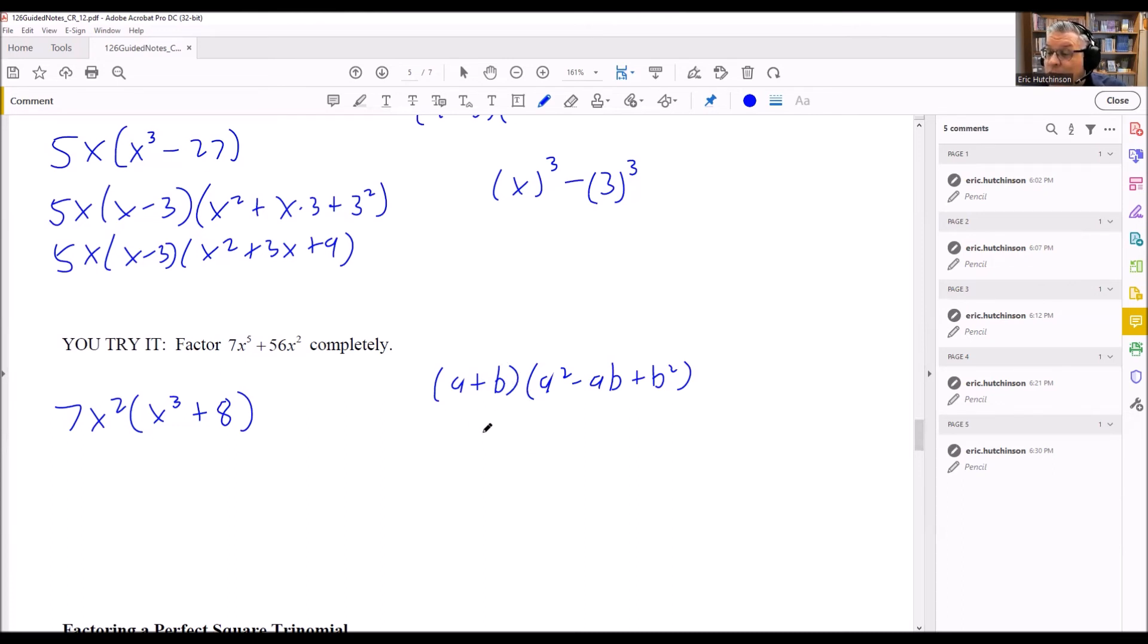The x cubed plus 8, we can write that as x quantity cubed. And then the 8 can be written as 2 cubed. So now my a is x, and the b is going to be 2.